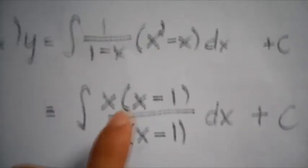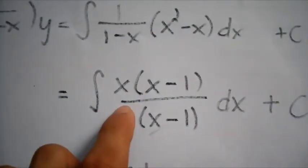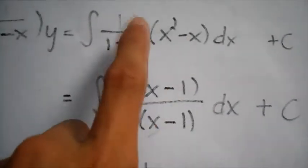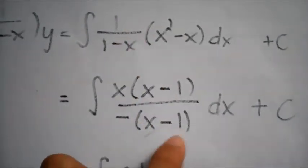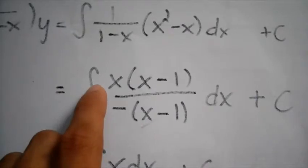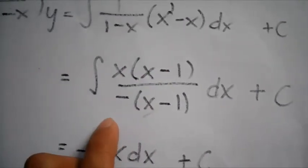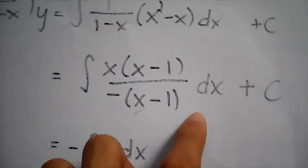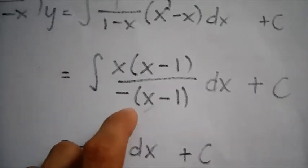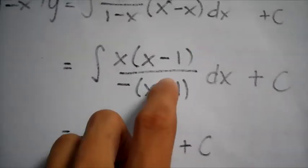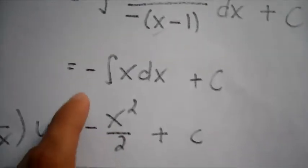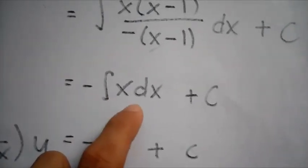Now by manipulating the values here we get by factoring out x and factoring out negative 1 in the denominator, we get x multiplied by quantity x minus 1 divided by negative quantity x minus 1 dx plus c. So this cancels out to each other so we just get negative integral of x dx plus c.